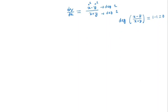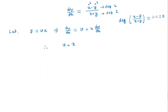So we will solve it by letting y equal to vx. Then we get dy/dx equal to v plus x times dv/dx. If we substitute this into the differential equation, we get v plus x dv/dx is equal to (x minus vx) divided by (x plus vx).